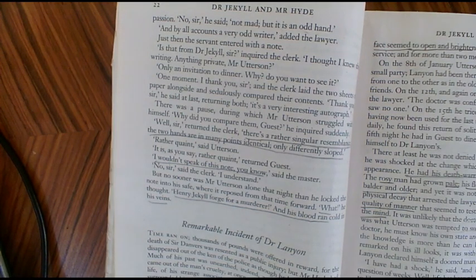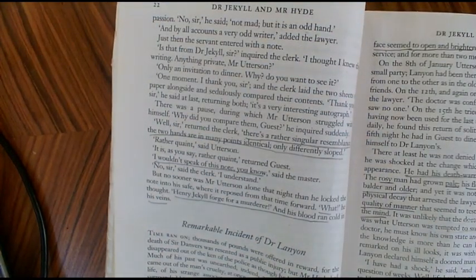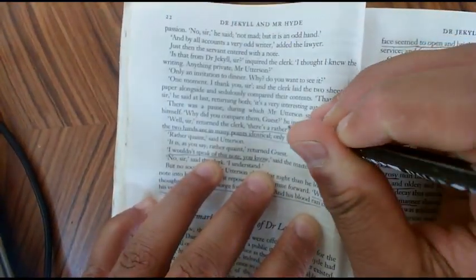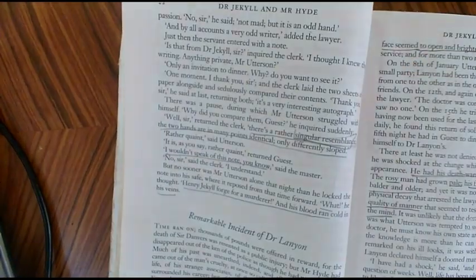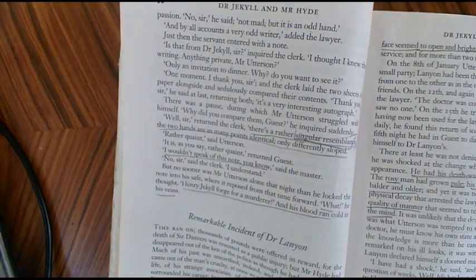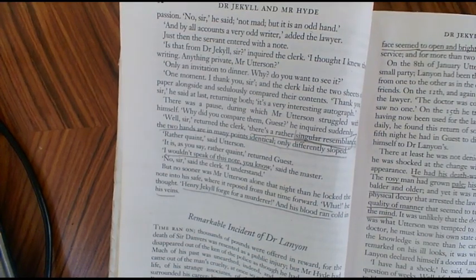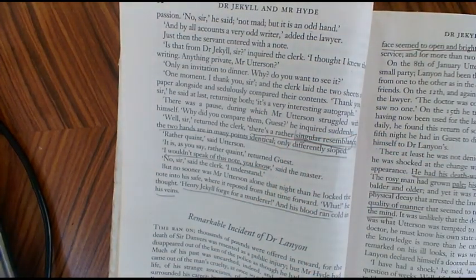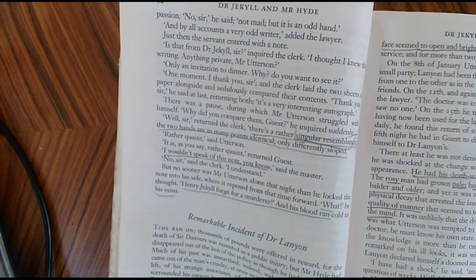What's particularly significant — and I'm not going to spend a great deal of time here — but you'll notice that each character speaks in understatement. They're not saying what they truly think, or they're softening what they truly think. When Guest says it's a 'rather singular resemblance' between the two handwritings, what he's saying in an understated way is that the same person wrote both these notes. And this is significant because Utterson and Guest — particularly Utterson — interpret that as meaning that Jekyll has forged for Mr. Hyde, that he's somehow complicit with Hyde in his illegal activities.